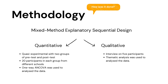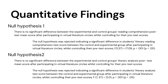From the mixed method explanatory sequential design, the findings are as follows. The first null hypothesis claims there is no significant difference between the experimental and control group's reading comprehension post-test mean score after participating in virtual literature circles while controlling for their pre-test score. The second null hypothesis states there is no significant difference between the experimental and control group's literary analysis post-test mean score after participating in virtual literature circles while controlling for their pre-test score.